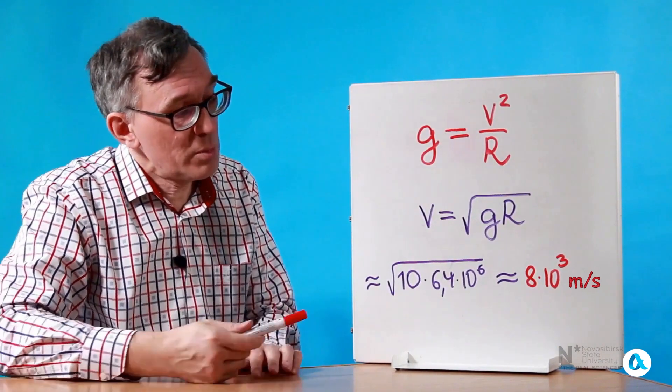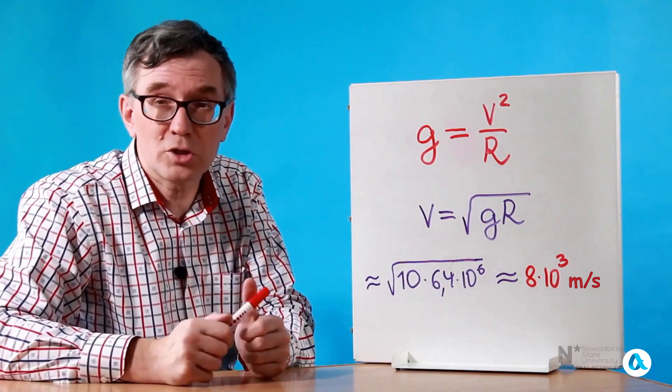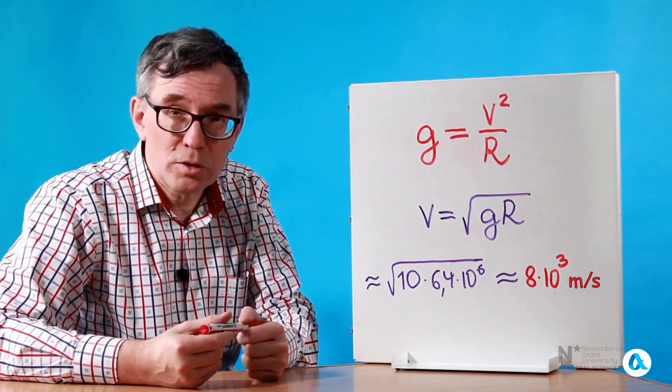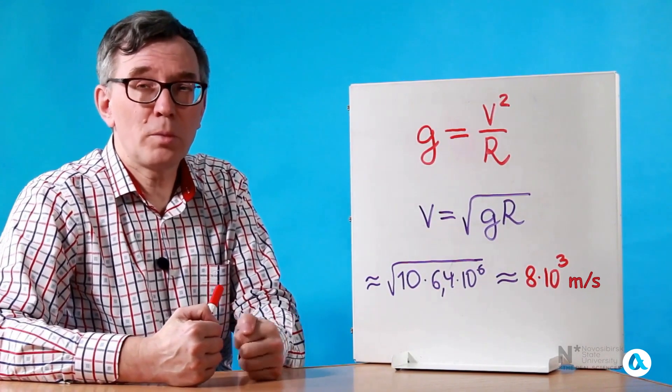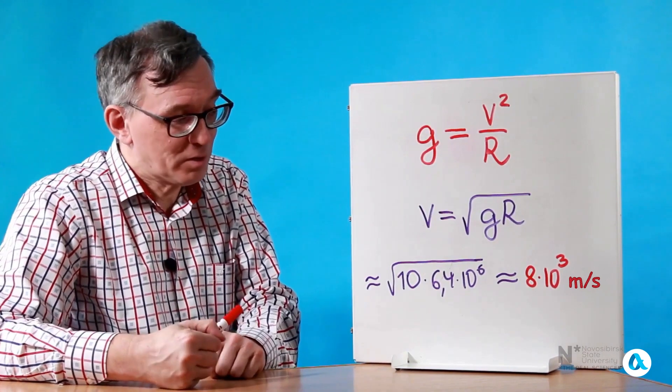And from here we immediately find the speed of a projectile in a circular orbit by taking the square root of GR. And this speed is indeed actually referred to as the first cosmic velocity, which must in fact be imparted to an object in order for it to move around the Earth in a circular orbit.